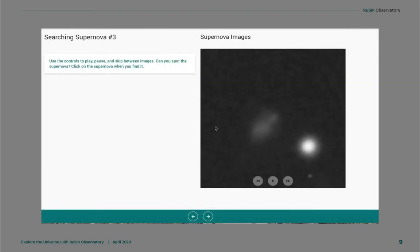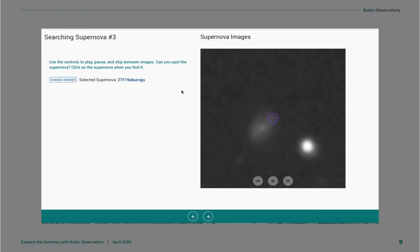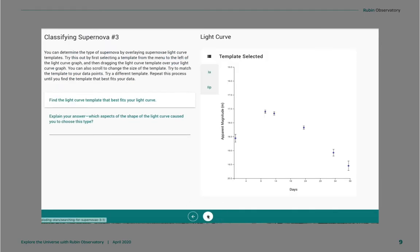In our supernova investigation, students have been previously taught how to identify supernovae that are exploding in other galaxies by viewing a series of images over different nights. Once they locate the supernovae, they click on it, and from there they go to another page where they see a plot of all of the observations of the magnitudes of the supernovae that were taken, a light curve.